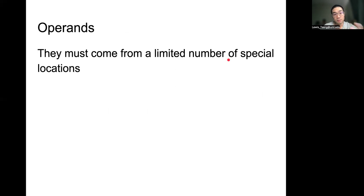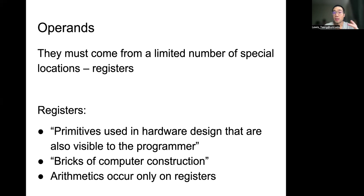The first terminology or concept to understand is called operands. Those operands must be stored from a limited number of special locations. If you remember the a equals to b plus c example, operands like a, b, c, those are variables. So where are those things stored? In terms of MIPS design, those special locations are called registers.